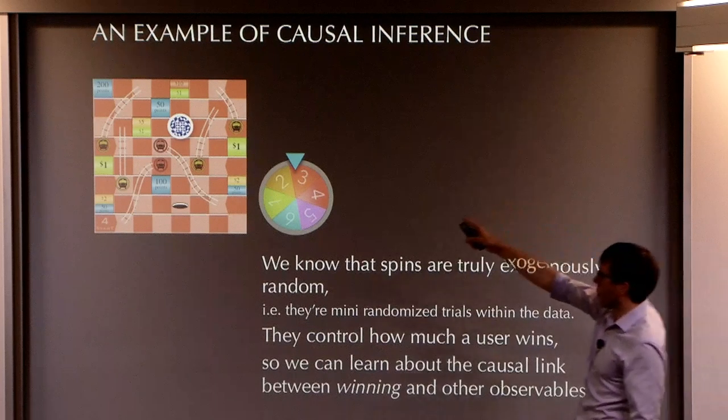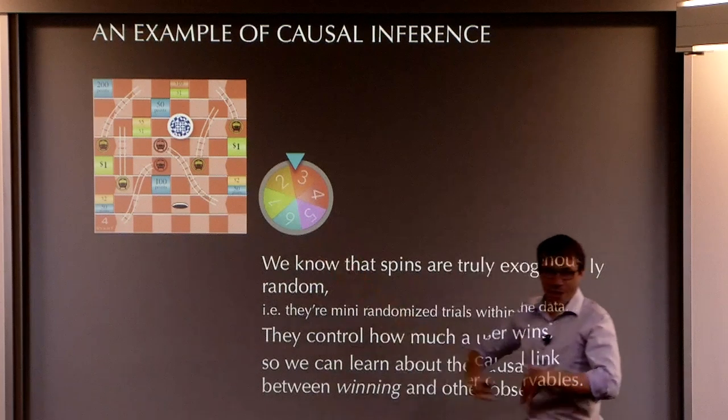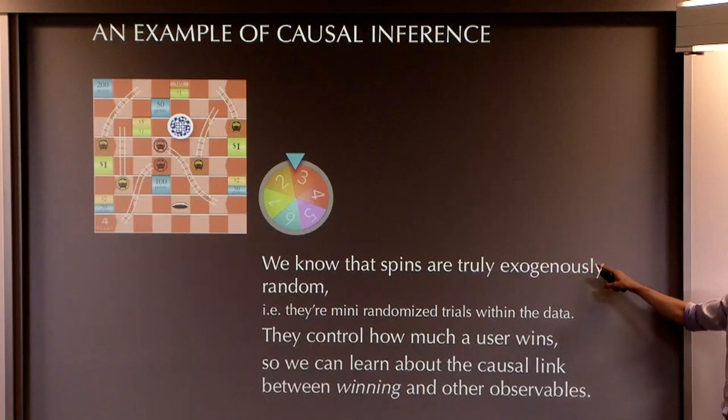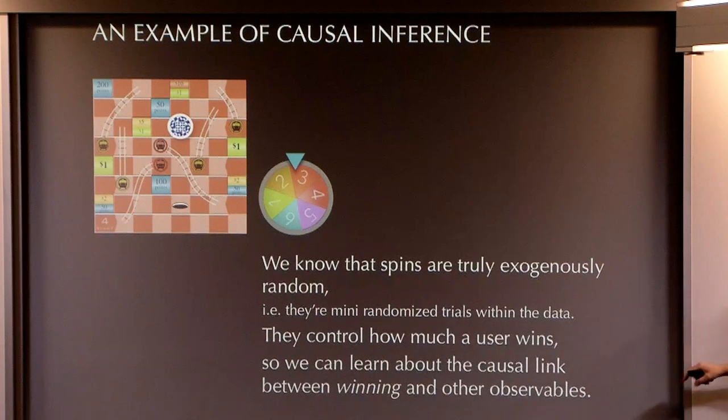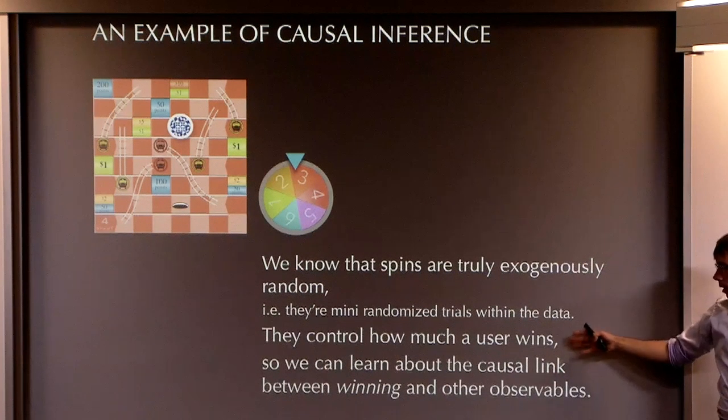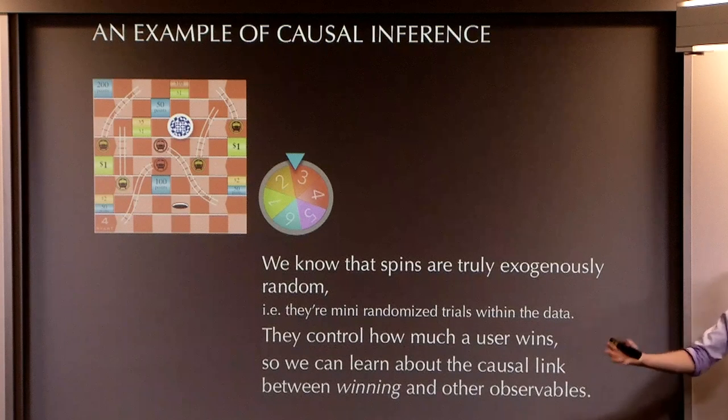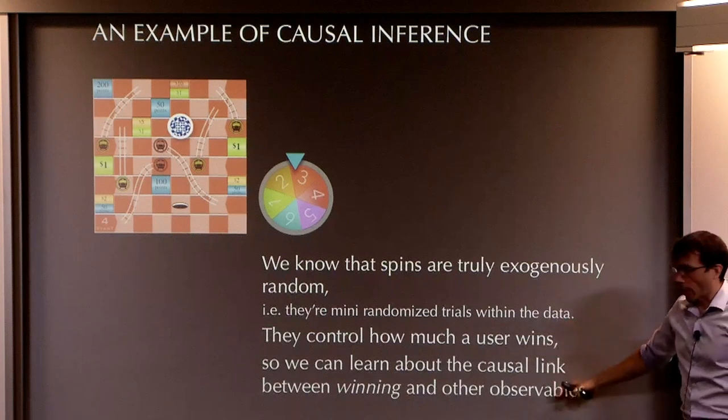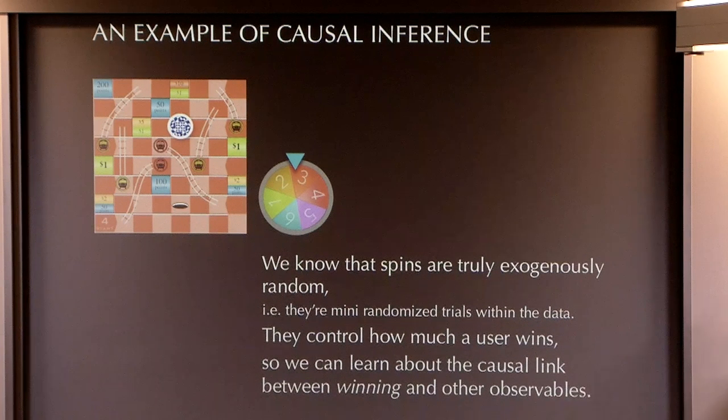So, this user got a three, the user missed out, they're in the non-winning arm. So, we know that spins are truly exogenously random, they're mini randomized trials, they control how much a user wins. So, it's this knowledge which gives us the causal link, which says, if you win, then you will do such and such. We can treat this as a genuine stimulus. And it's these causal links that become the basis for a generative model, that become the basis for a simulation tool.